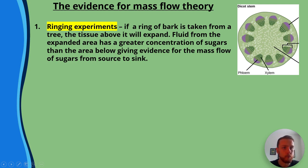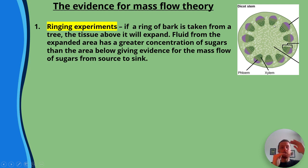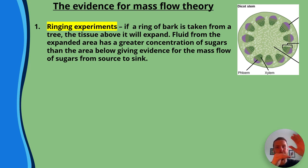In this diagram of a woody stem, the phloem is on the outside and the xylem on the inside. If we take a ring of bark away, we remove the phloem but leave the xylem behind. Because the phloem is gone from that region, all the sugar accumulates above where the phloem is missing.